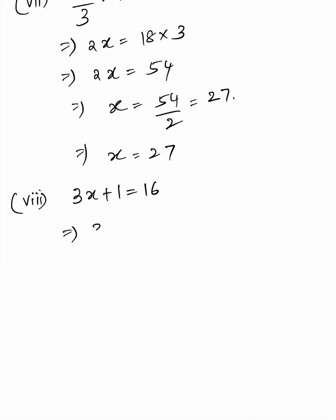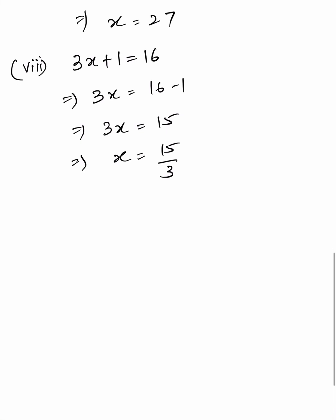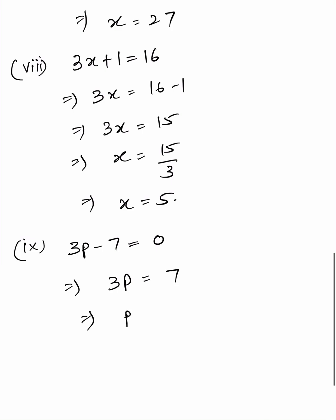Eighth: solving the equation gives x equals 5. Ninth: 3p minus 7 equals 0, so 3p equals 7, giving p equals 7 by 3.